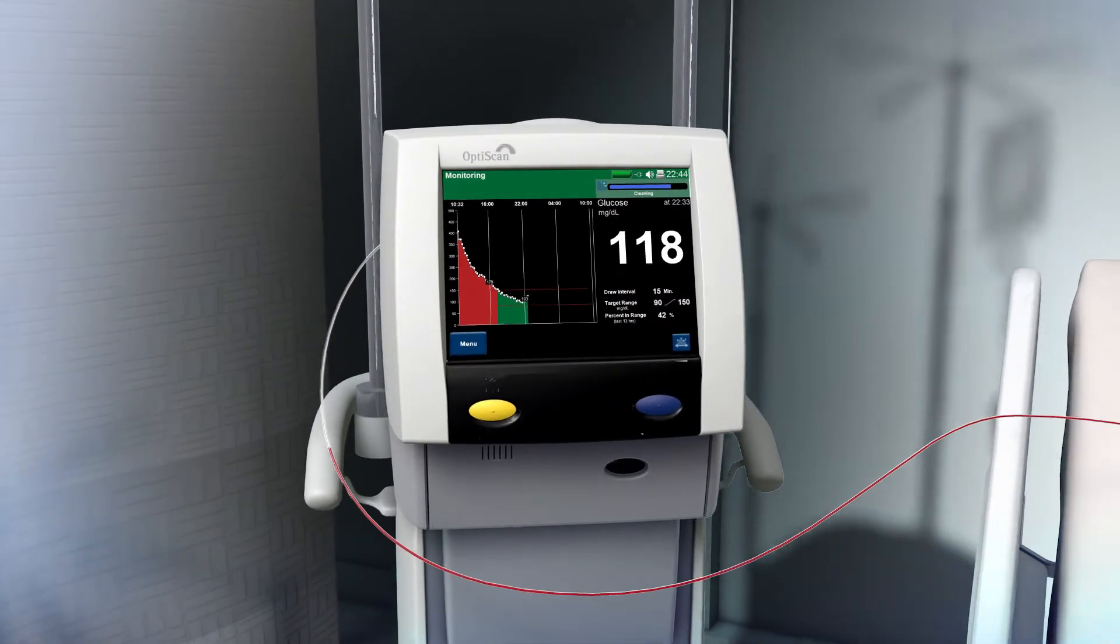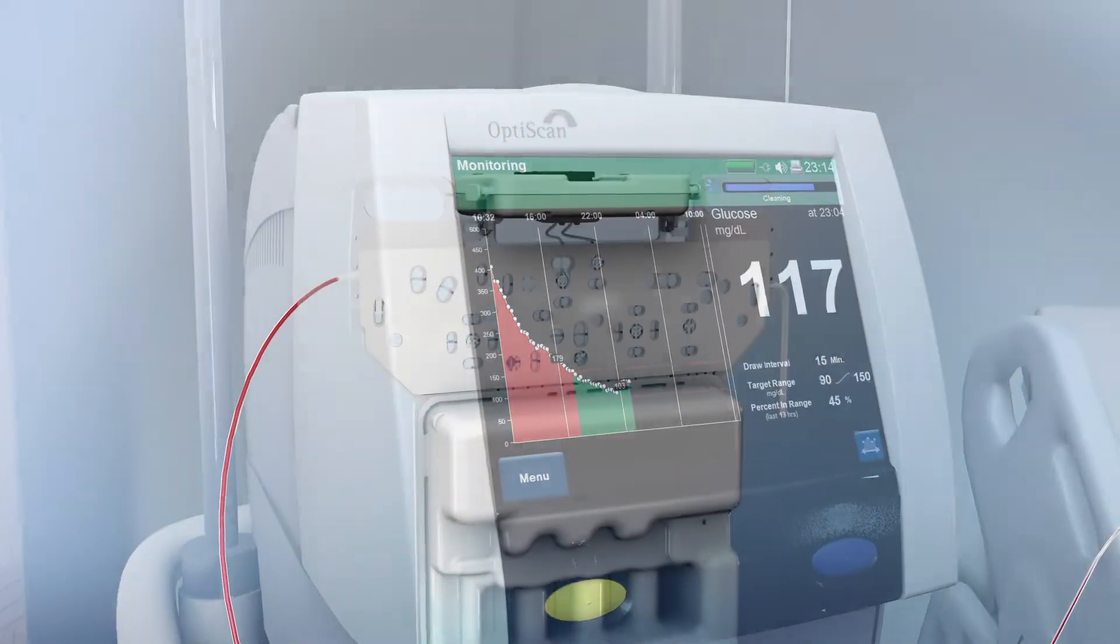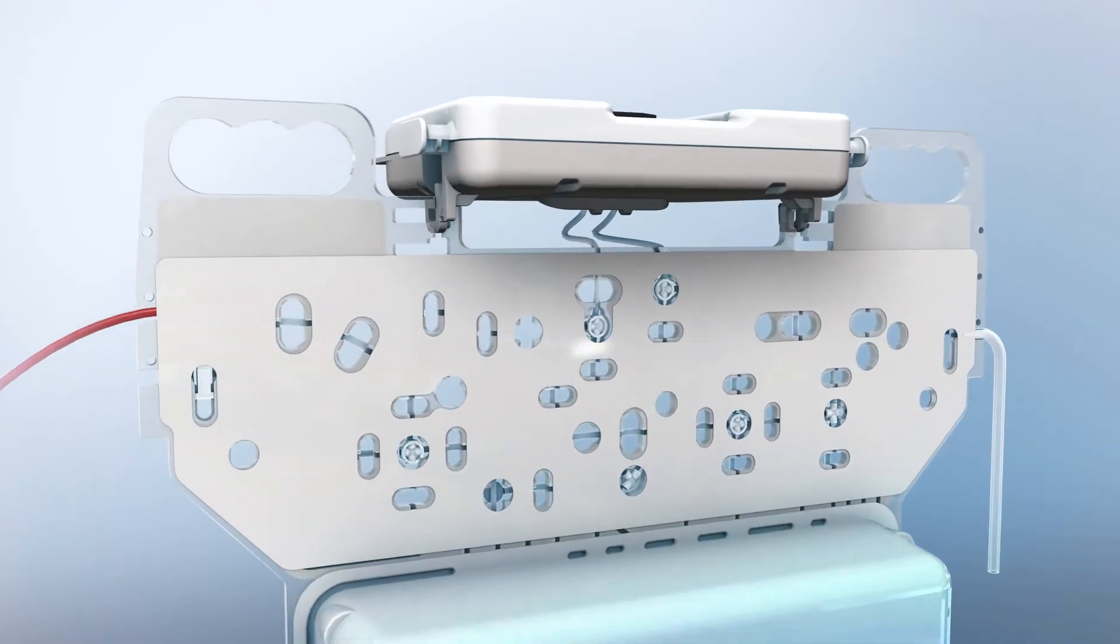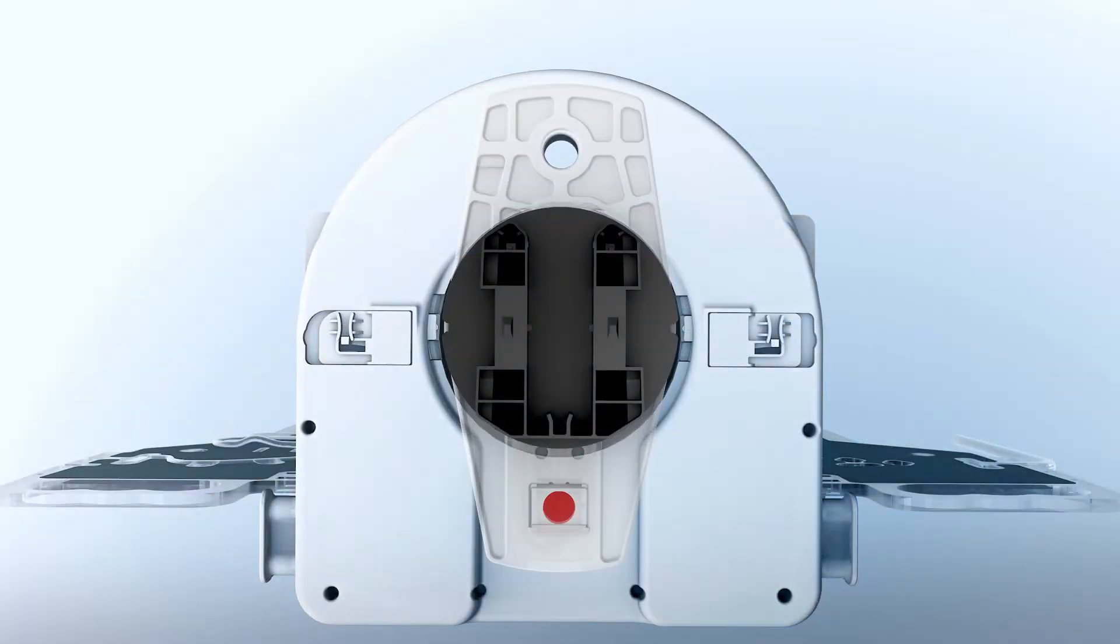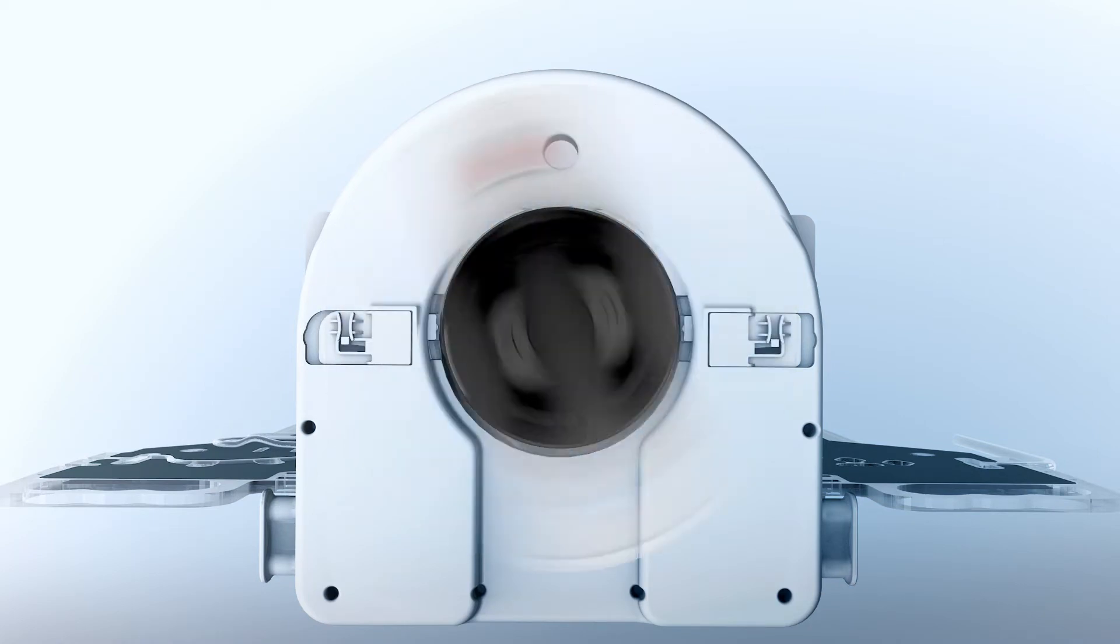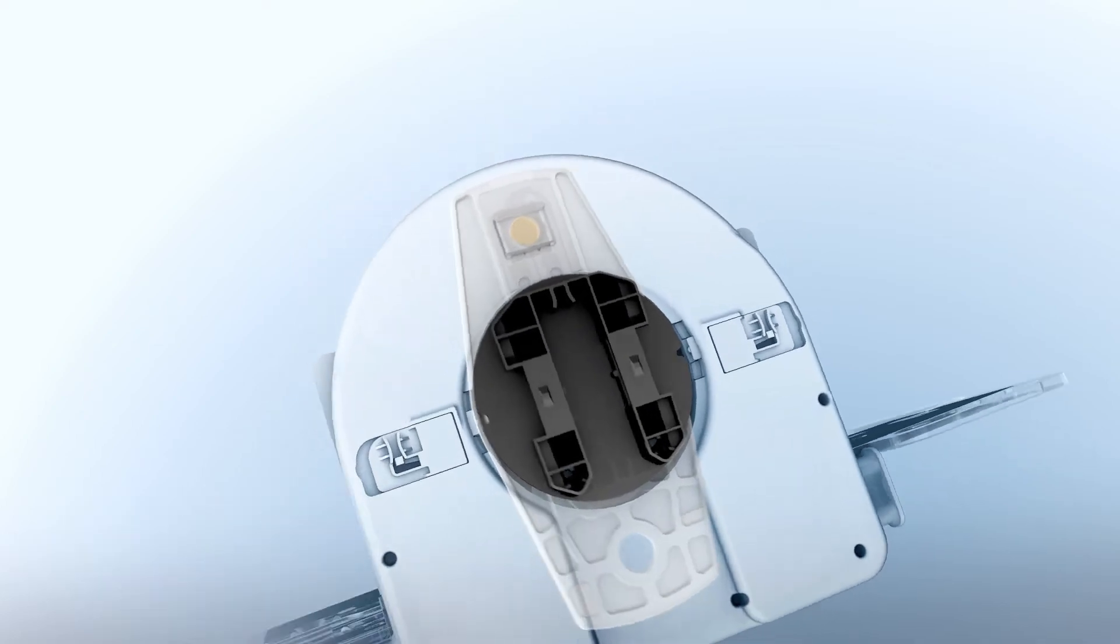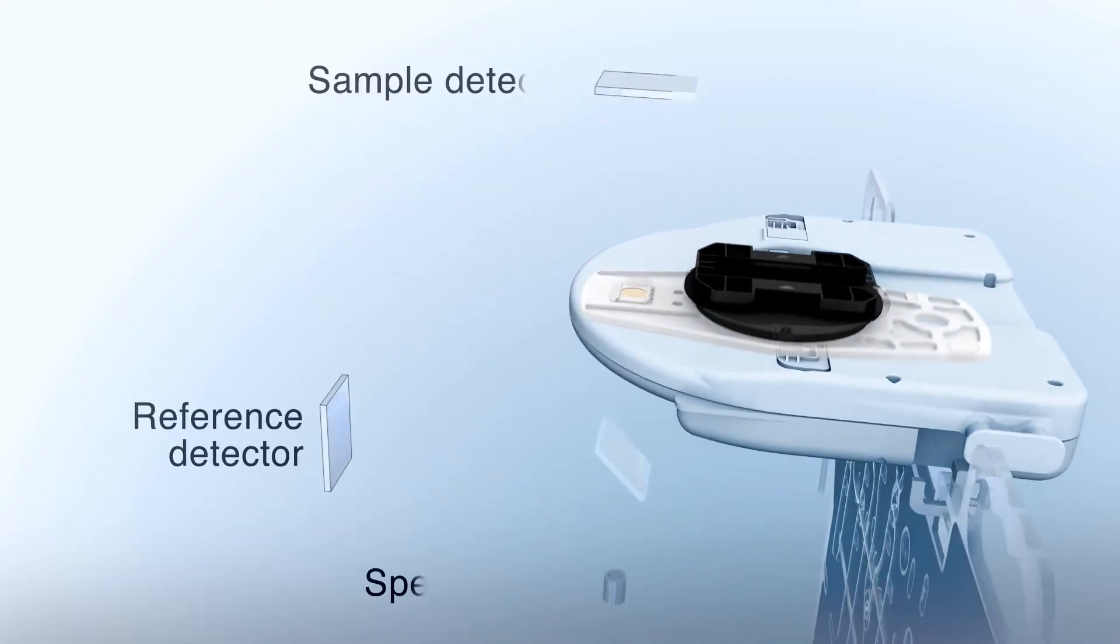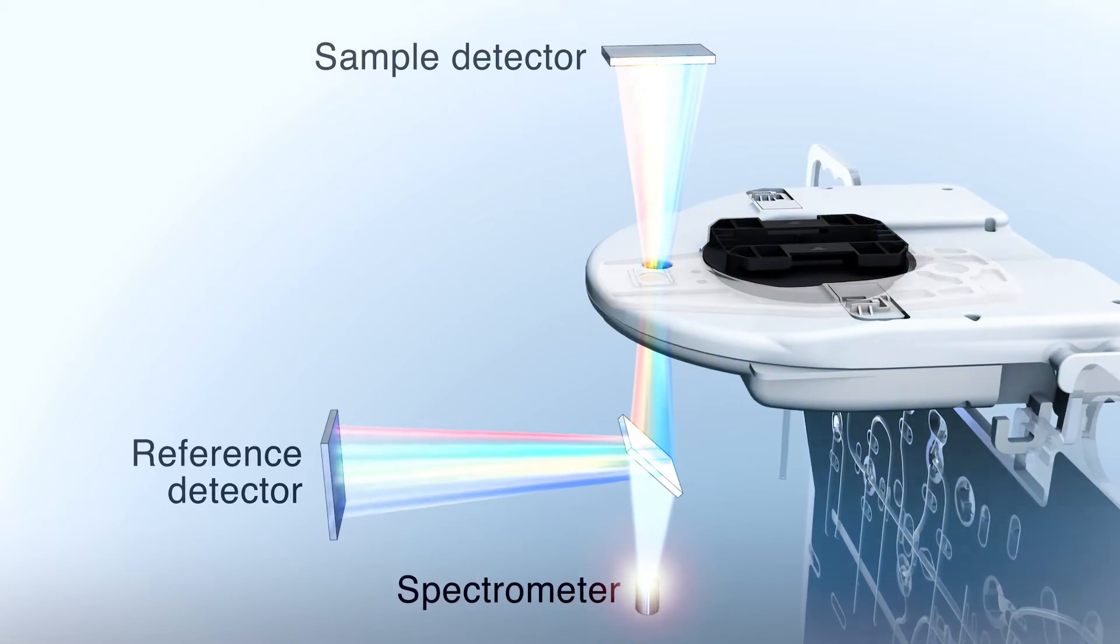The OptiScanner automatically draws blood every 15 minutes. A microsample of blood is isolated and heparinized within the disposable cartridge, where it is centrifuged to separate plasma from other blood components. The spectrometer measures blood glucose directly from the plasma sample without the need for calibration.